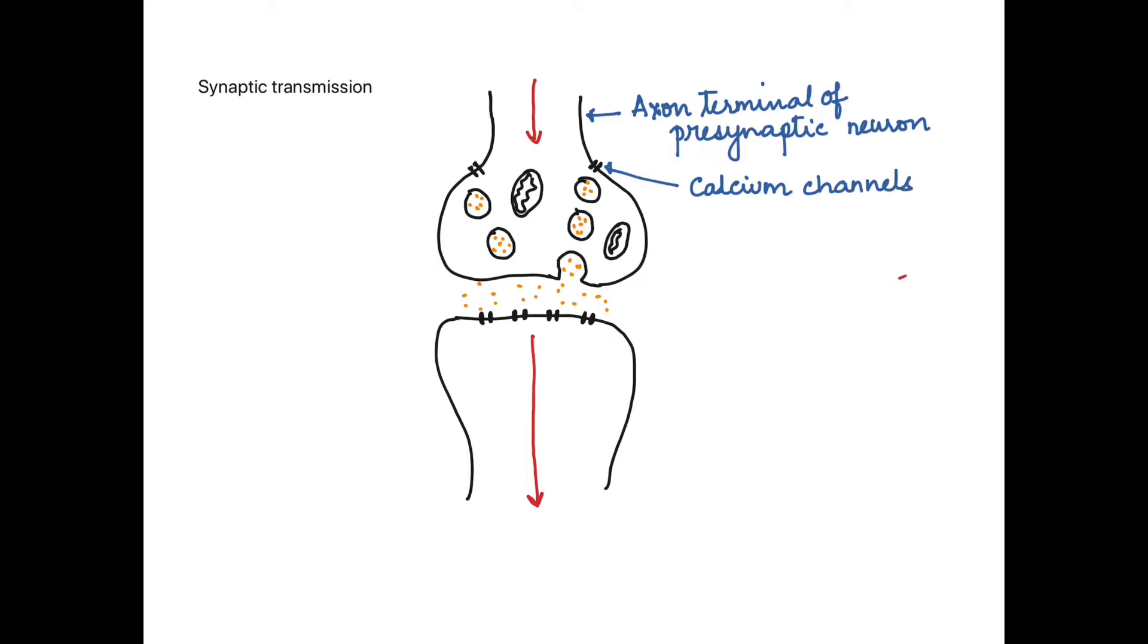These calcium channels open as the nerve impulse arrives and allow the calcium ions to enter inside. These calcium ions then go and bind to the synaptic vesicles. The synaptic vesicles here contain the neurotransmitters. Now there are certain mitochondria also present which provide energy during this process.